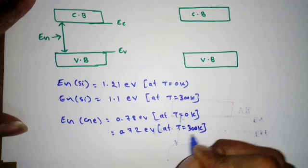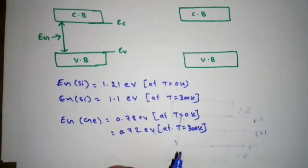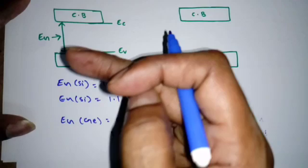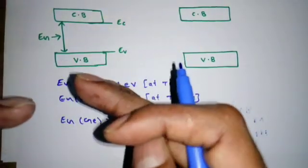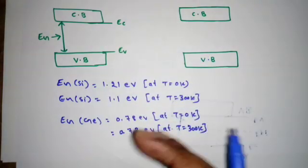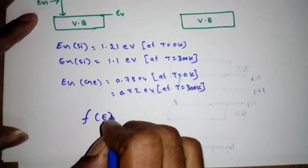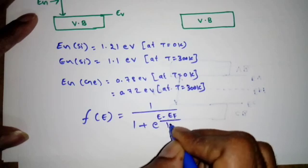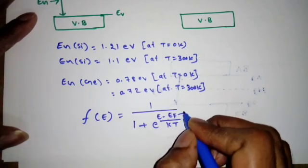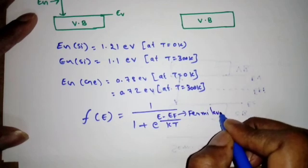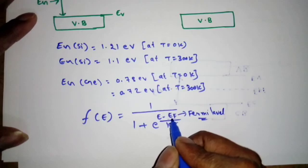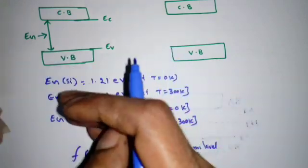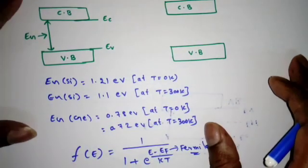We add one more energy level called the Fermi level to indicate whether there are more electrons or more holes. From the Fermi-Dirac distribution function, f(E) = 1 / (1 + e^((E - Ef)/kT)), Ef is called the Fermi level. If the energy level equals the Fermi level, the probability of occupancy of an electron is 50%.